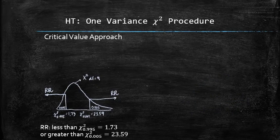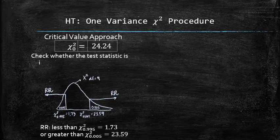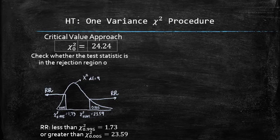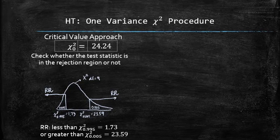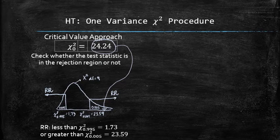In the critical value approach, we must check whether the test statistic is in the rejection region or not. Our test statistic is 24.24 and it is to the right of the critical value 23.59. Thus it is in the rejection region.